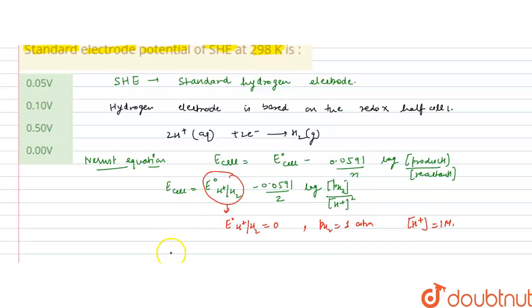Substituting these values: E_cell = 0 - (0.0591/2) × log(1). Since log(1) = 0, the entire expression equals 0.